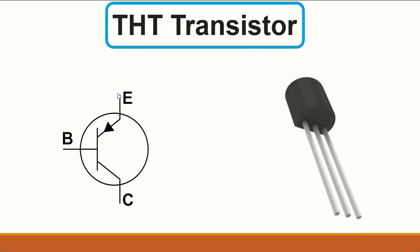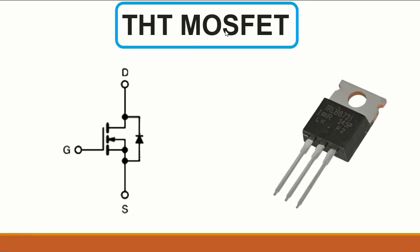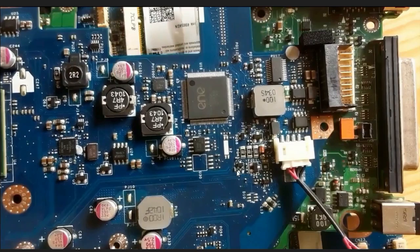The next component is the transistor. As we've seen before, it has base, emitter, and collector — three terminals. This is called THT, or Through-Hole Technology, because it has leads or terminals. Then we also have the THT MOSFET, which similarly has through-hole terminals.